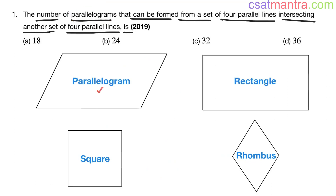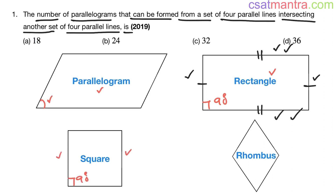There are some special cases of parallelogram. When the angle is 90 degrees, we call it a rectangle — opposite sides are parallel and of equal length. When the angle is 90 degrees and all sides are equal, we call it a square. The difference between a rectangle and a square is that in a rectangle opposite sides are equal, whereas in a square all sides are equal.